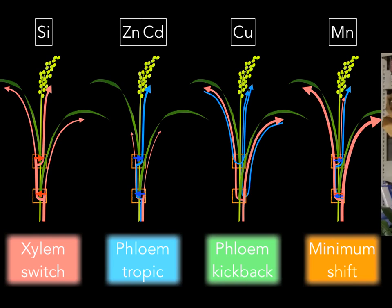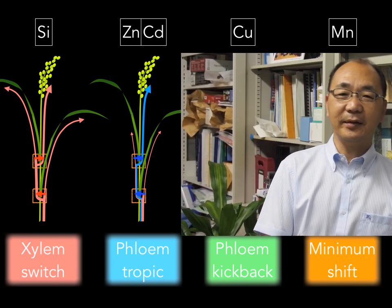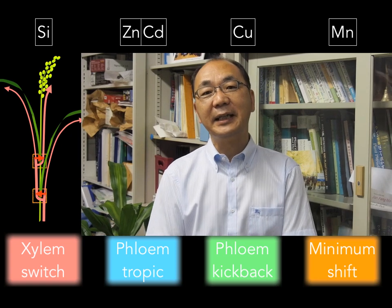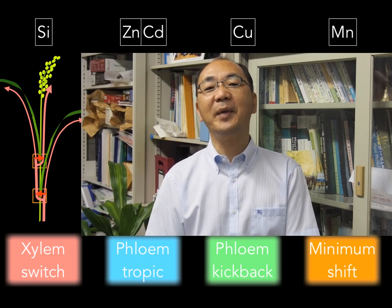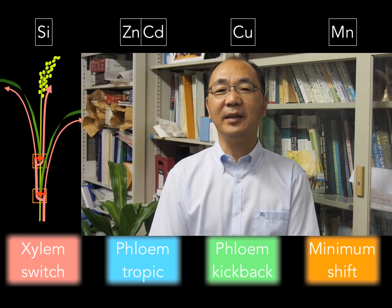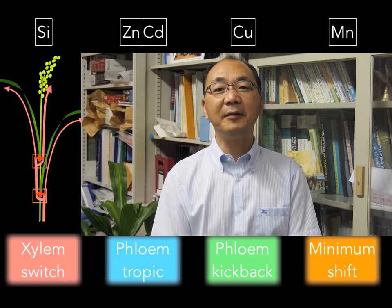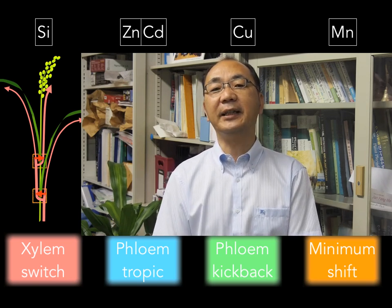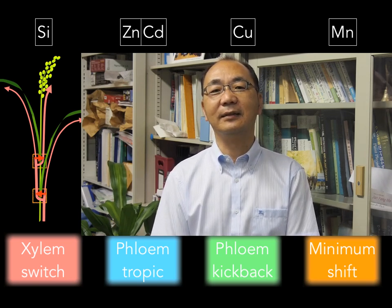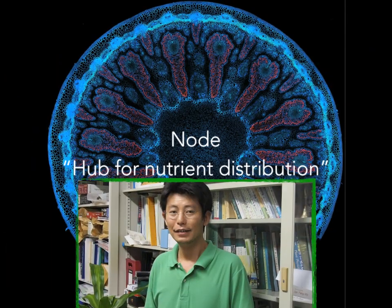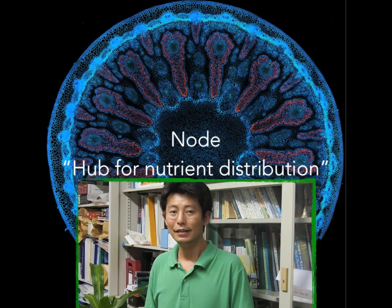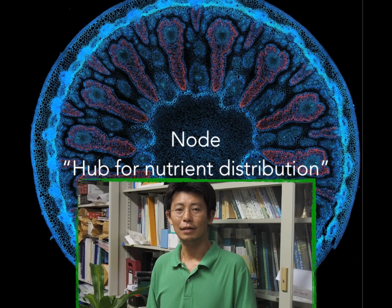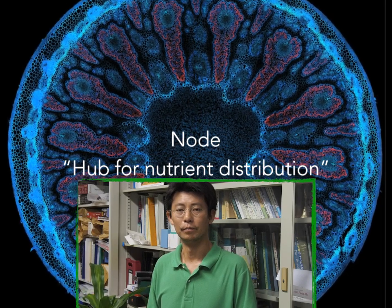In future, more transporters functioning in the node need to be identified, and the regulation mechanisms, especially in response to environmental change, should also be investigated. As a conclusion, the node is a hub for mineral element distribution, but the study is just started.